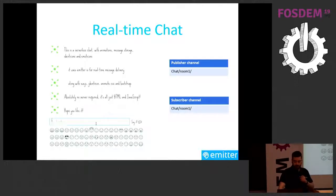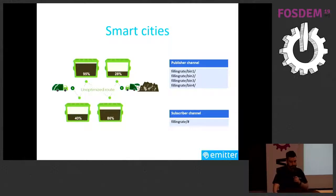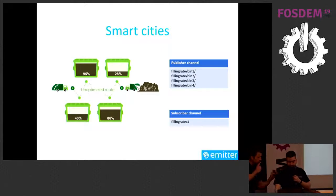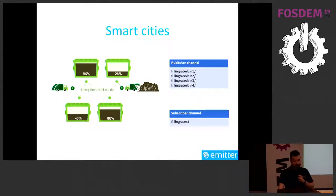Another use case is smart cities. We had a guy in Turkey who explained that in big Turkish cities, garbage trucks don't go directly to the landfill — they go to intermediary bins to empty their load. They need to monitor the filling rate of each bin to optimize truck routes, so they don't empty a load into a bin that's already full. A sensor in each bin publishes its filling rate, and a dashboard subscribes to all bins using a wildcard channel.